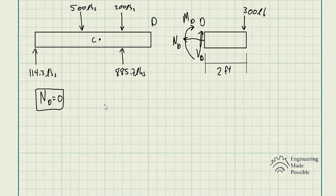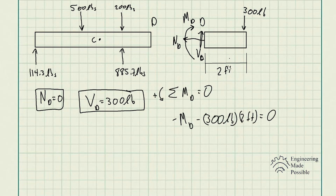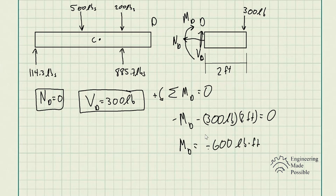For the sum of forces along the Y direction, we have VD and the 300-pound force, giving VD equal to 300 pounds. For the sum of moments about point D — taking counterclockwise as positive — MD is negative by convention and the 300-pound force also causes a clockwise moment, so it's negative 300 pounds times 2 feet, giving MD equal to negative 600 pound-feet. The negative sign indicates the moment is actually counterclockwise, opposite to what was assumed.